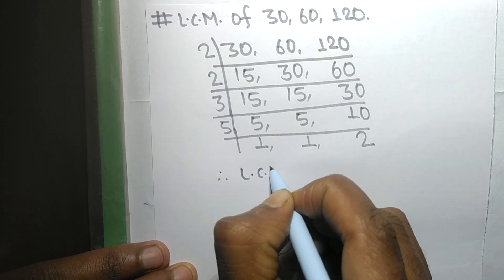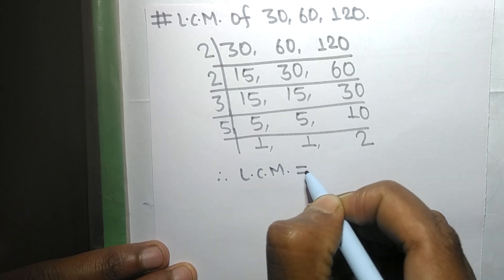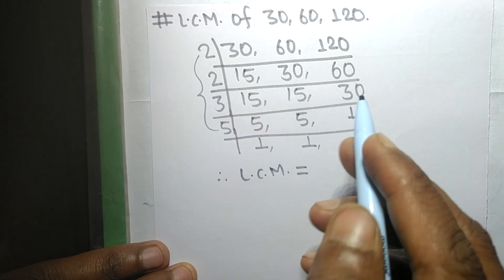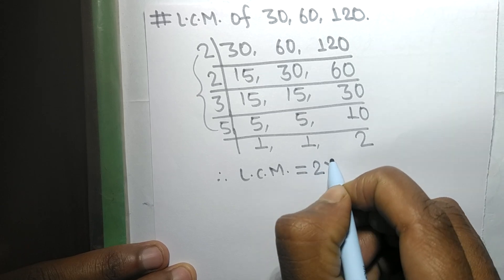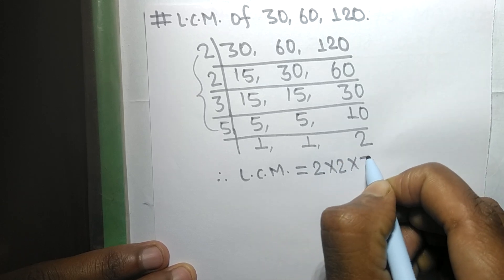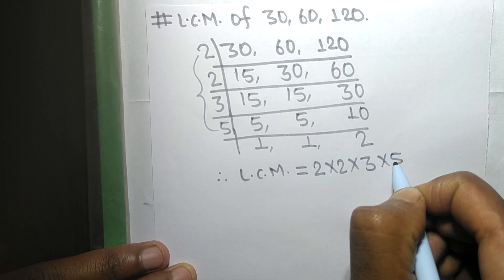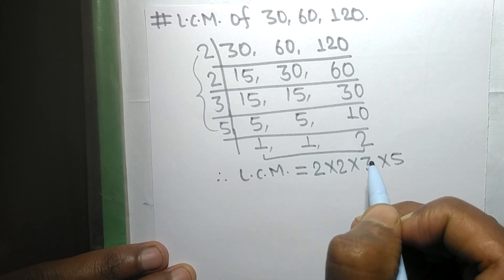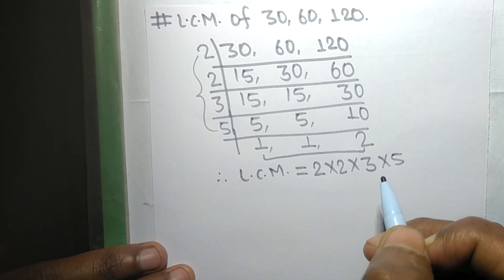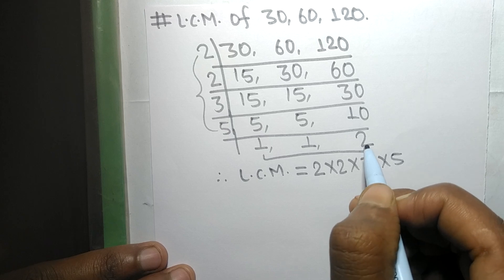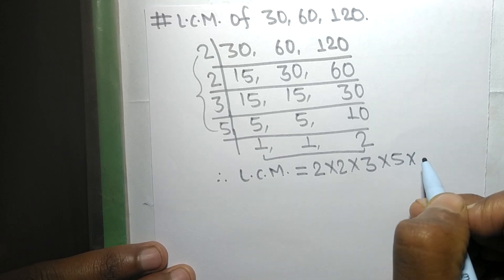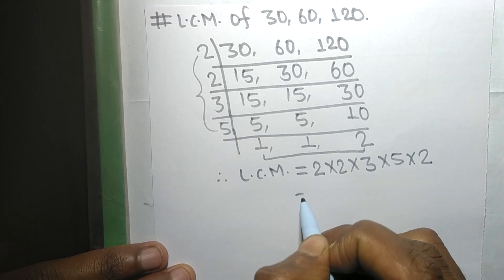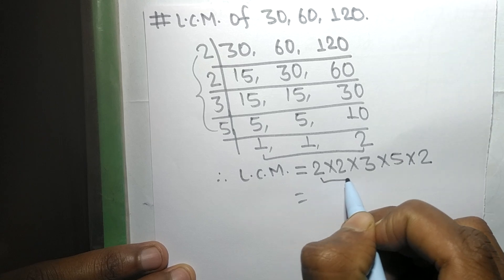The LCM is equal to 2 times 2 times 3 times 5 from this side, and from the other side we choose the numbers greater than 1, that is 2, so multiplied by 2. By multiplying all these numbers we get 120.